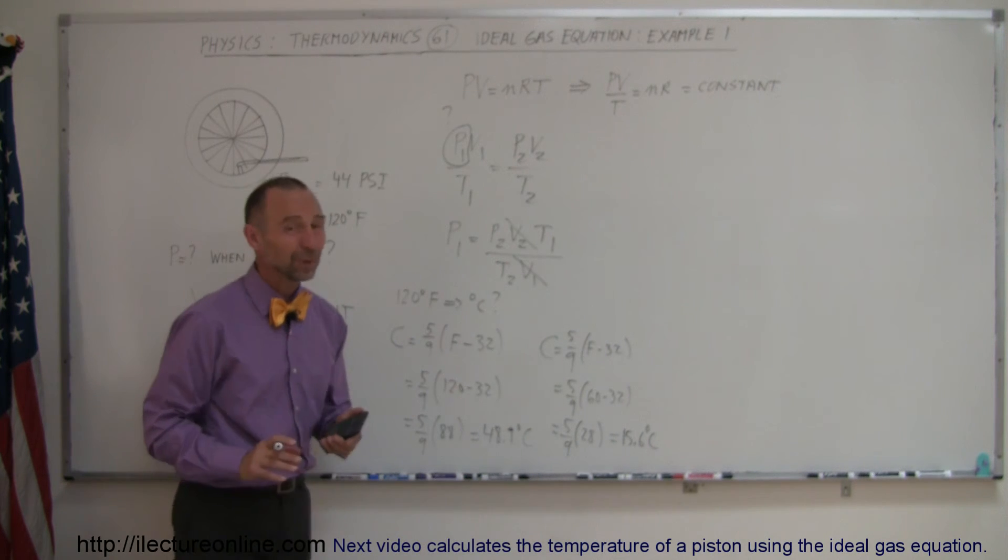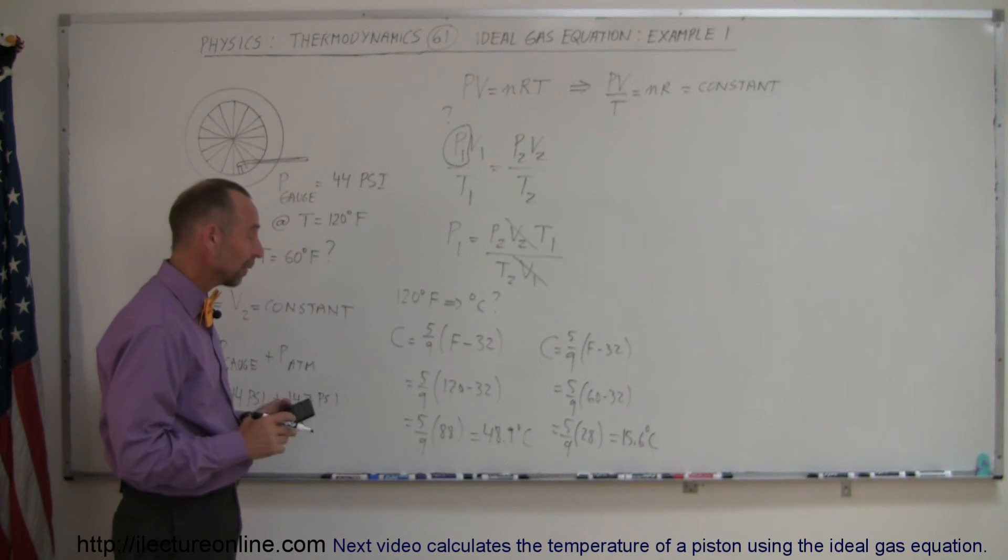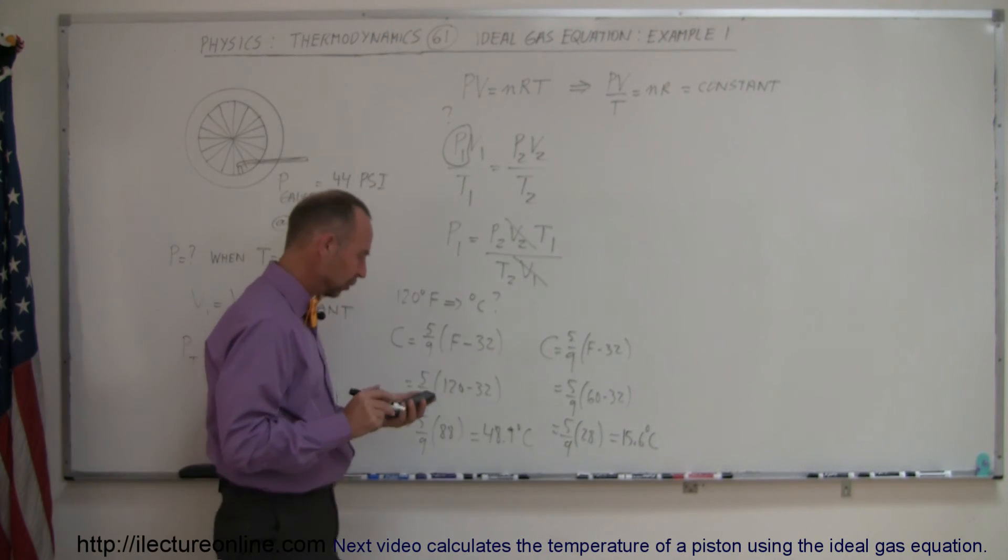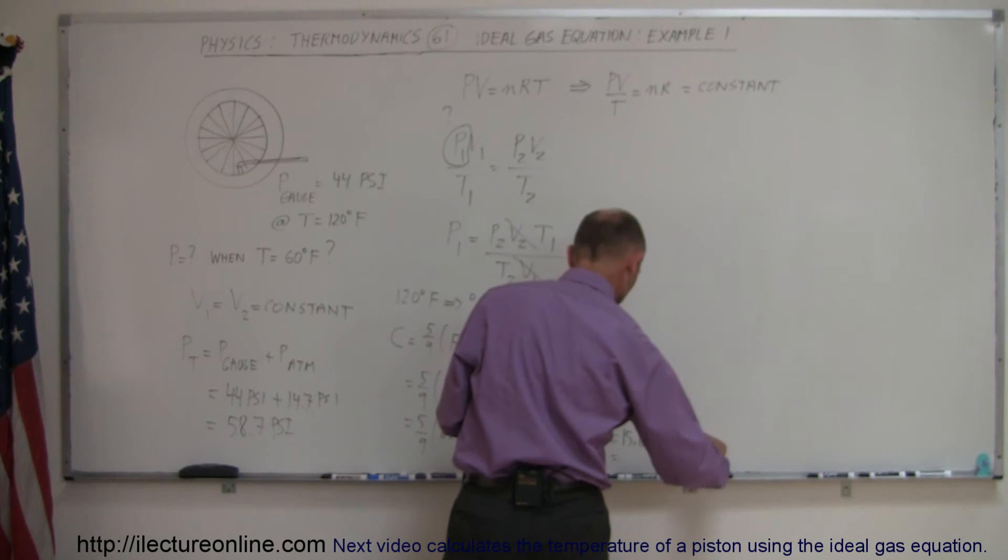And then, of course, we can use centigrade degrees in there. We have to convert that to Kelvin degrees. So we have to add 273 to each. So 15.5 plus 273 equals 288.6. So that's equal to 288.6 Kelvin.